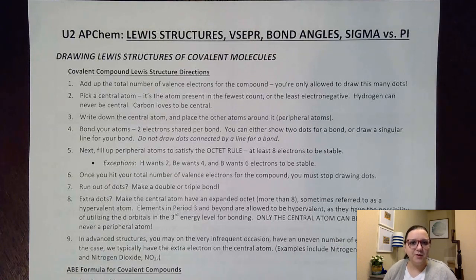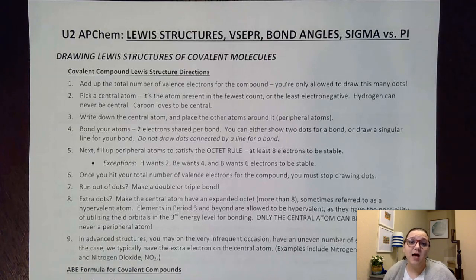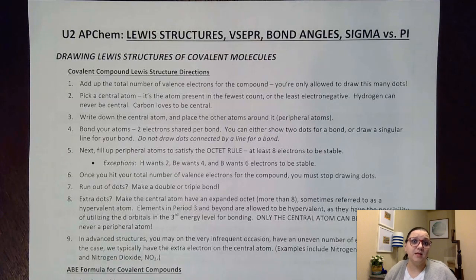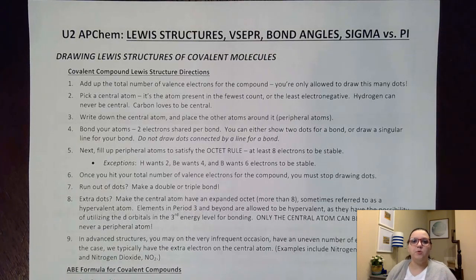I know a lot of you remember how to do this from pre-AP, so this is going to be a refresher. But we are going to readdress all those quirky things we might see, such as expanded octets, double and triple bonds, or exceptions to the octet rule. I find students that go through the steps I'm going to talk about here tend to be most successful when drawing Lewis structures, especially with double and triple bonds and expanded octets. So if you have to pick a method, I prefer you to use this one.